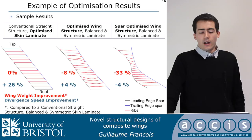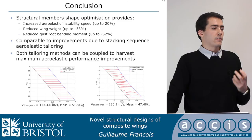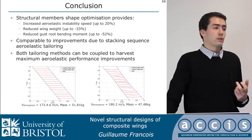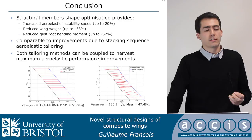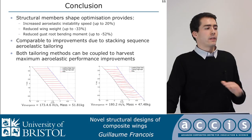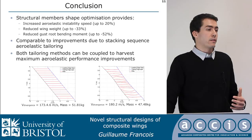The main takeaway is that we proved shape optimization of structural members works as an aeroelastic tailoring method. In some cases we reduced wing weight by 33%, increased aeroelastic instability speed by 20%, and reduced root bending moment during a gust load case by up to 52%. These improvements are comparable to standard stacking sequence optimization, but what's really interesting is that coupling the two together harvests maximum improvements — they should work together for maximum wing structure gains.